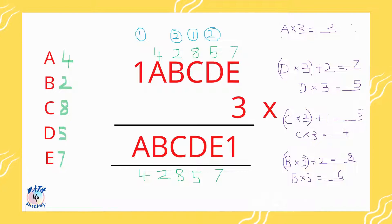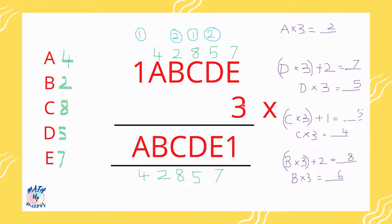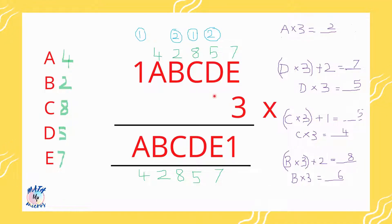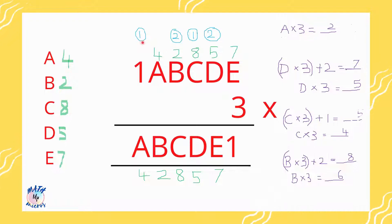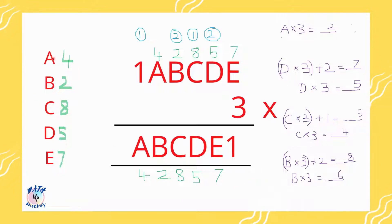It is time to check this multiplication and confirm whether these numbers are right. 7 times 3 is 21 — 1 is written and 2 carried over. 5 times 3 is 15 plus 2 is 17 — 7 written, 1 carried over. 8 times 3 is 24 plus 1 is 25 — 5 written, 2 carried over. 2 times 3 is 6 plus 2 is 8 — no carry over. 4 times 3 is 12 — 2 written, 1 carried over. 1 times 3 is 3 plus 1 is 4. The multiplication is perfect. We have found a=4, b=2, c=8, d=5, e=7.